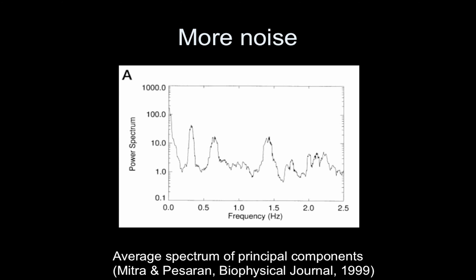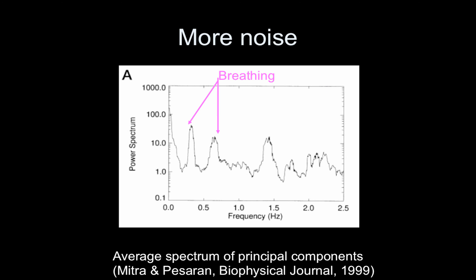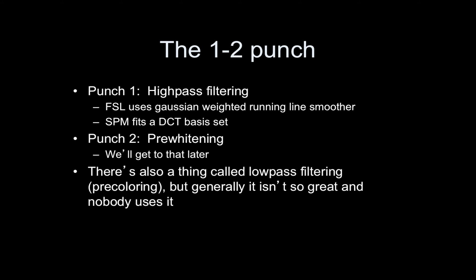Here's a really beautiful power spectra, averaged over principal components, that specifically brings out the specific parts of the signal. So there's the low-frequency noise — that's what we're going to tackle today. There's also a breathing artifact that's aliased, and a cardiac effect. But those we're not going to worry about today. We're going to worry about that low-frequency. So there are two things we do: the first is high-pass filtering, the second is pre-whitening. Today we're only going to talk about high-pass filtering.